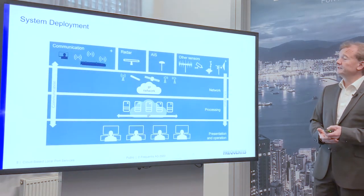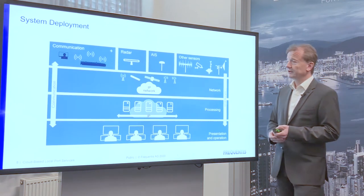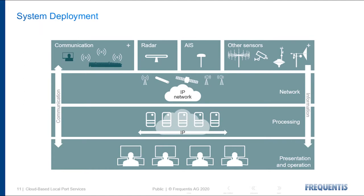This is how a system deployment for a cloud-based local port service should look like. We have the communication sensors at the site — VHF radios, AIS base station, CCTV cameras, meteorological sensors, and possibly radio direction finders or radar. The network is IP — nothing else than IP. We have the processing layer located in the cloud, either on-premise or in a public cloud, and the user interface — the presentation and operation layer — is thin-client-based, running in the browser window of our operators. Communication flows from operators via the cloud, via the network towards the sensors and back.